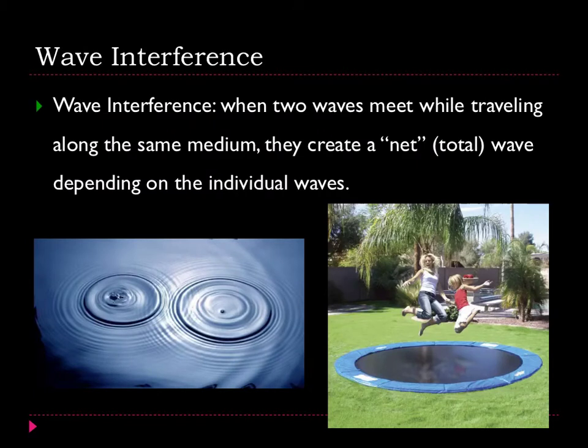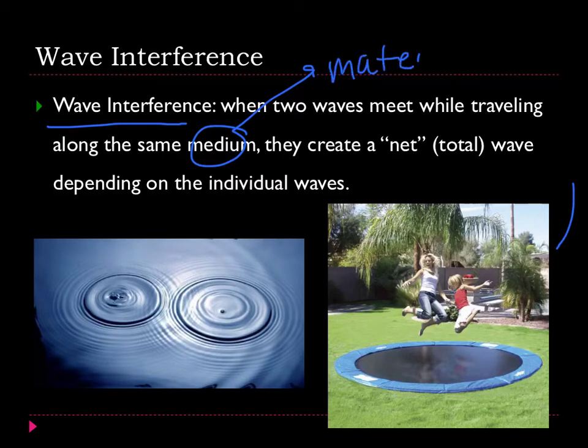Today we're going to be talking about this idea of wave interference. The definition is that when two waves meet while traveling along the same medium, remember medium is just another word for material, they create a net or total wave depending on the individual waves.